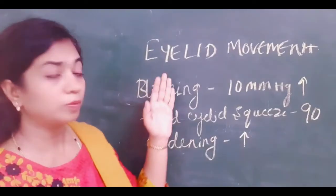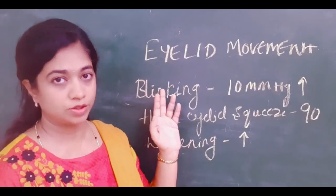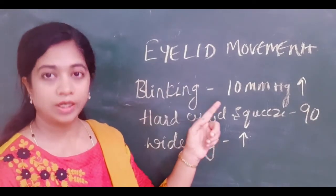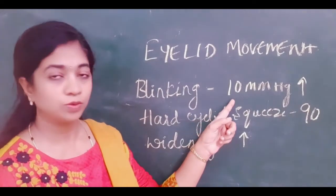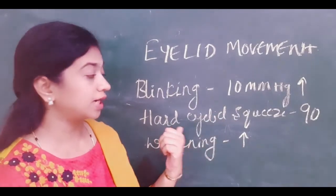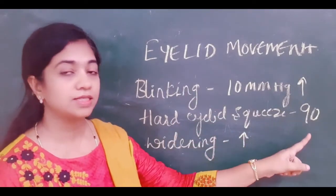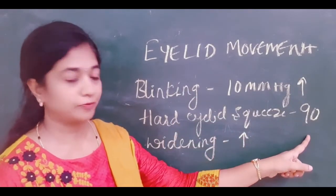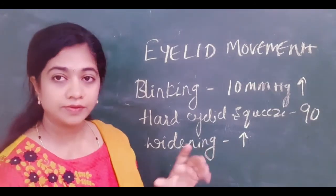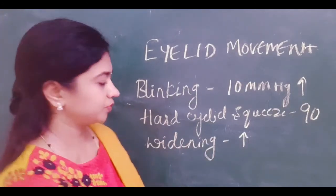Even normal eyelid movements have an effect on intraocular pressure. With normal blinking, the IOP can rise up to 10 mmHg, and with a hard eyelid squeeze, the IOP can increase up to 90 mmHg. Widening of the eyelid tends to increase IOP by 2 mmHg.